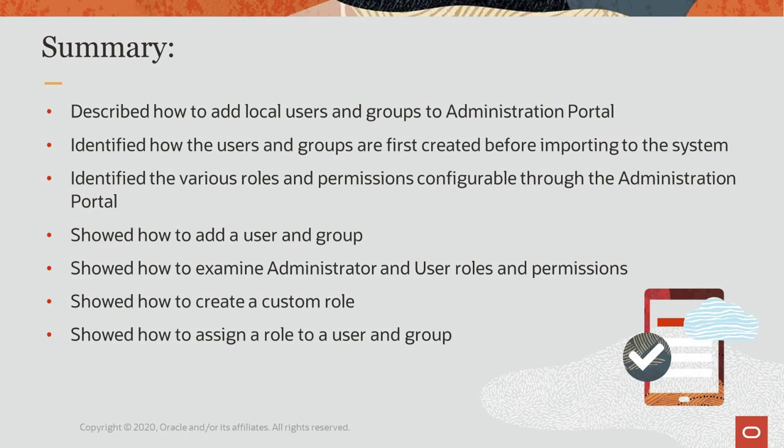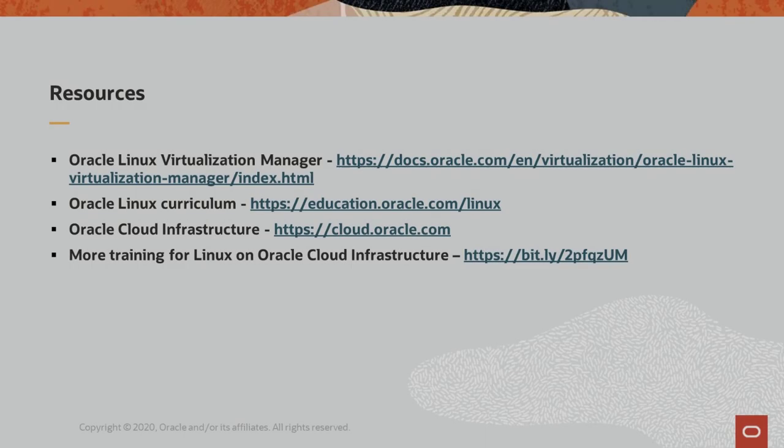In this video, we described how to add local internal domain users and groups to the Oracle Linux Virtualization Manager system. We identified how the local users and groups are created before they can be imported into the system. We demonstrated how to add these users and groups, and introduced the roles and permissions available for them in the Oracle Linux Virtualization Manager Administration portal. We looked at the types of roles and saw how to view the permissions settings for the various roles. We saw how to create a custom role, assign it permissions, and associate it with a user and group. Oracle provides extensive resources to find out more about this subject. You can find documentation on Oracle Linux Virtualization Manager at the link shown. For more information or to get started in Oracle Cloud Infrastructure, go to cloud.oracle.com. For more training on Linux on Oracle Cloud Infrastructure, go to the link shown here. That's the end of the video. Thanks for watching.